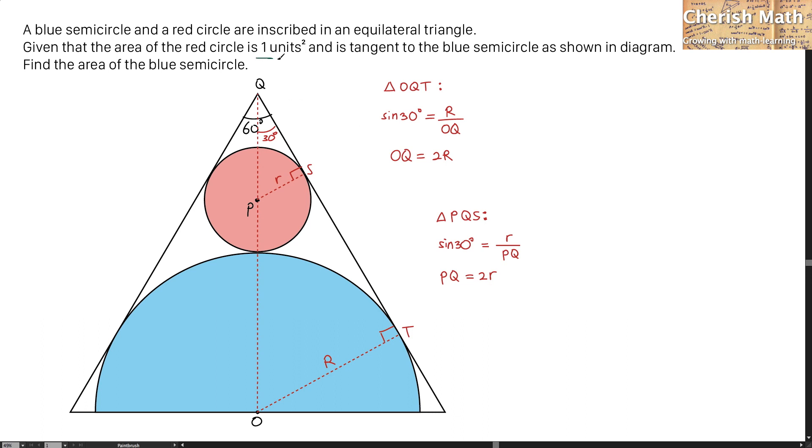Since the area of the red circle is given as one unit square, I can find the radius of this red circle, lowercase r, by using the formula πr² equals one. The value of lowercase r is one divided by the square root of π.